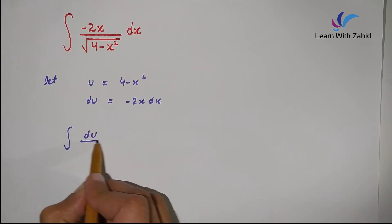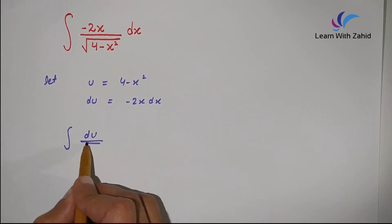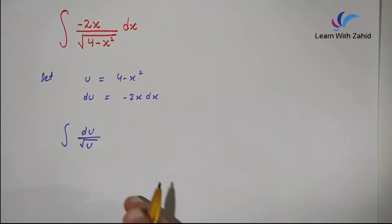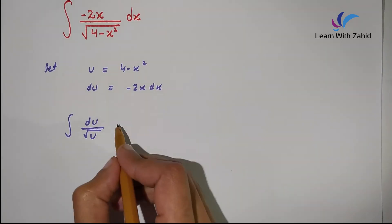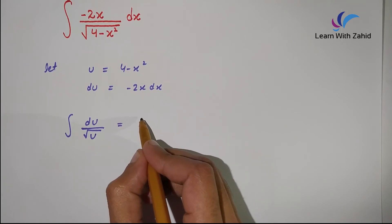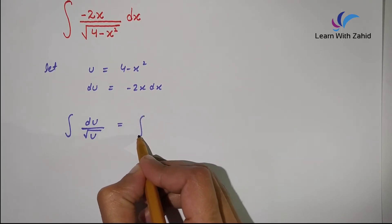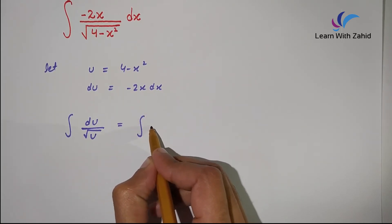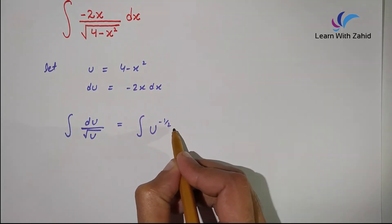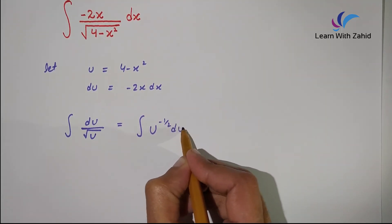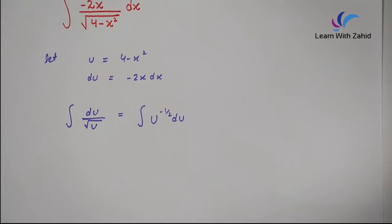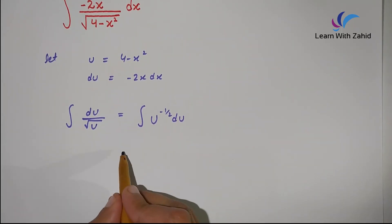The integral becomes du over square root of u, which equals the integration of u raised to the power minus 1 by 2, du.